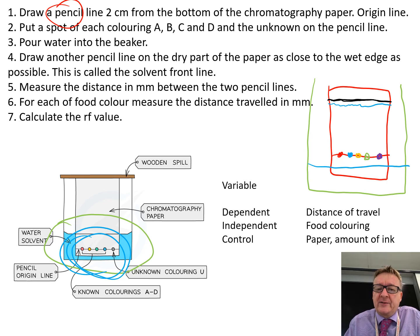Measure the distance in millimeters between the two pencil lines, from there to there. You measure that distance in millimeters. And measure the distance for each food color in millimeters again. If I just do the purple one—the purple one's gone that far.